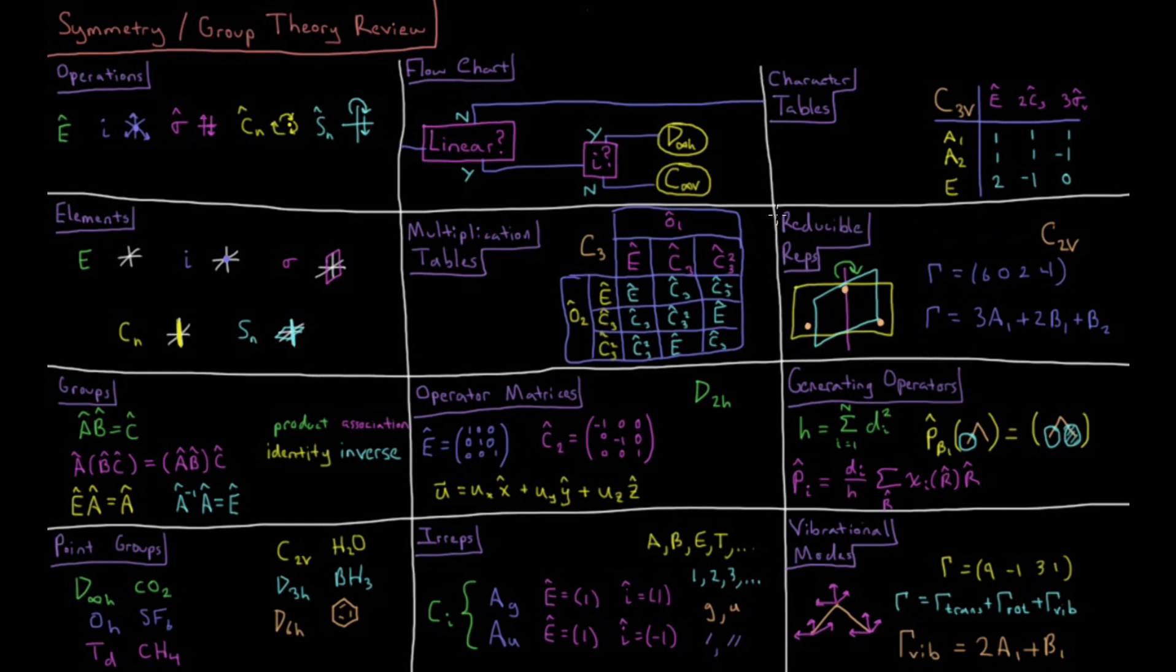We can take the reducible representation, which we get by acting on a set of objects with all of our symmetry operations. And that reducible representation, using a character table, we can turn into an irreducible representation, which is the sum of the various irreps of the point group.